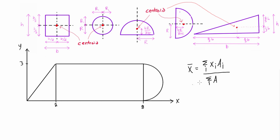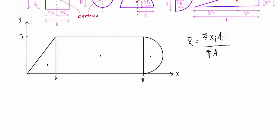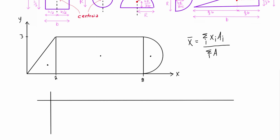We'll use this formula, knowing that the centroid of the triangle will be somewhere toward its tip, the centroid of the square will be in the middle, and the centroid of the semicircle follows its own formula. The easiest approach is to construct a table organized by parts — triangle, square, and then semicircle — and calculate each component.